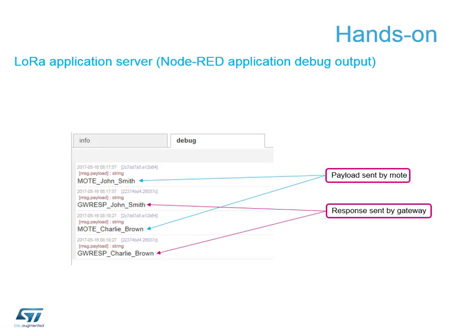This is the debug window on our application server. You can see the inbound messages containing the word 'moat' with 'John Smith' as our inbound message, and then our gateway response for the change payload will send the name out again but change 'moat' to 'gateway response'. As well as programming the application, you can look at the debug of what's going on in live terms - all happening inside our blue box.